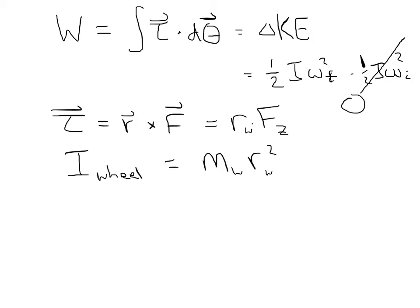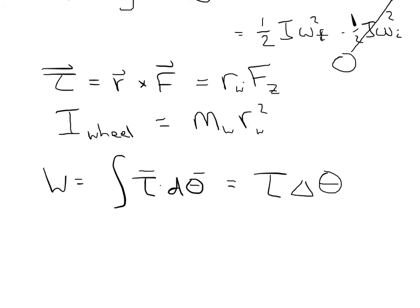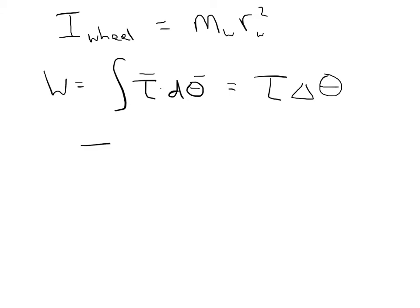And so the work is just going to be the integral of torque d theta. We can just say that torque dot d theta, the torque is going to be in the same direction as the change, so it's just going to be the magnitude of the torque times delta theta. So T delta theta is equal to one-half I omega squared.